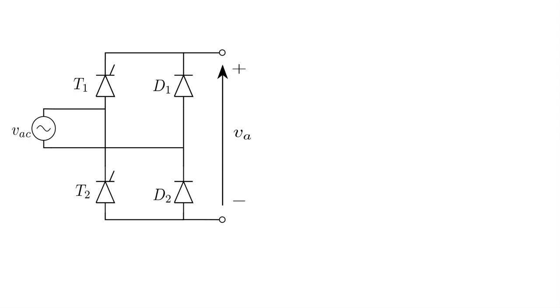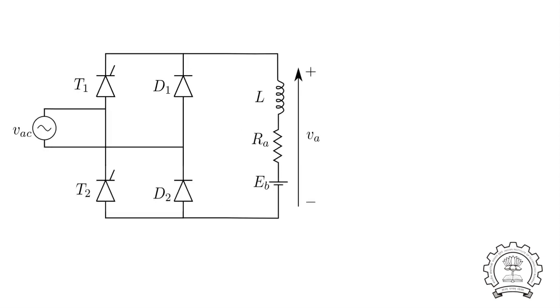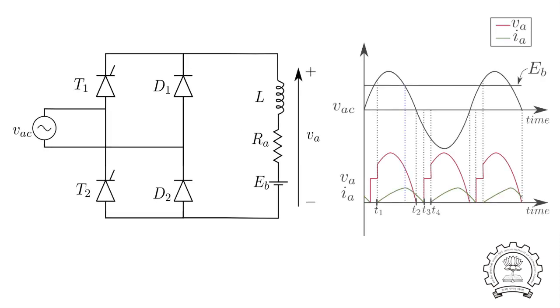The output of the converter will be connected to the armature winding or field winding. The armature circuit of the machine can be modeled as an RLE load. Here Eb represents the back EMF.